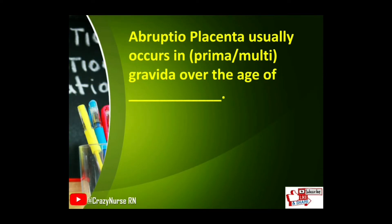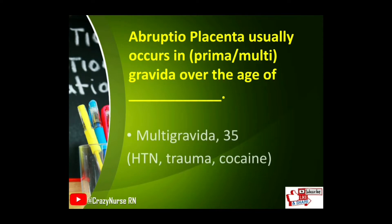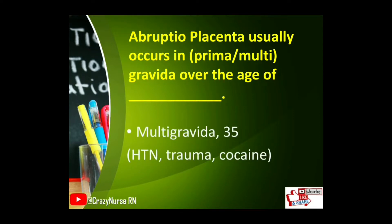Abruptio placenta usually occurs in multigravida over the age of 35.